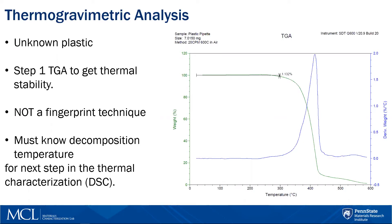Now that we understand the decomposition of this material, we are able to progress onto step two: performing a DSC. Looking at the current TGA curve, I would highly recommend not going over 300 degrees, as the material begins to fall apart and would ruin the DSC.